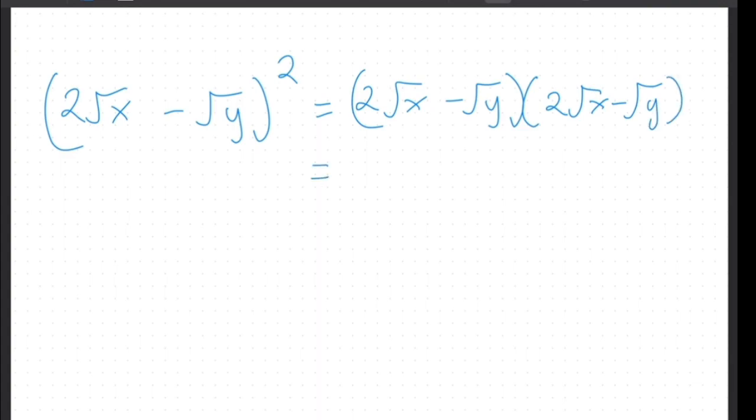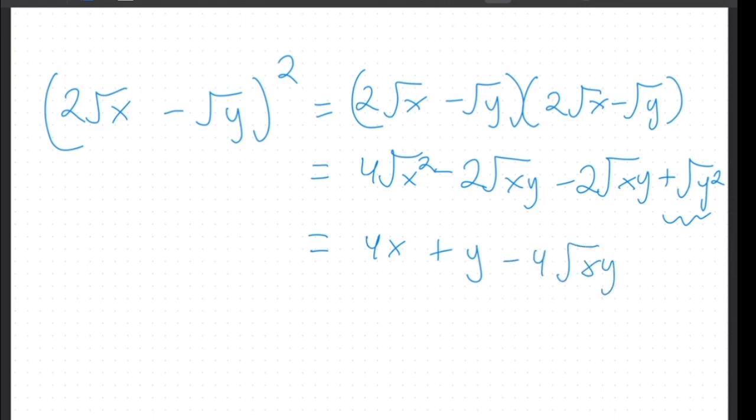we will get 4 root x squared minus 2 root xy minus 2 root xy plus y squared. And then just simplifying that, we will get 4x plus y from here, and then minus 4 root xy. So we will get 4x minus 4 root xy plus y.